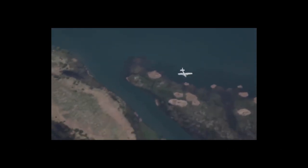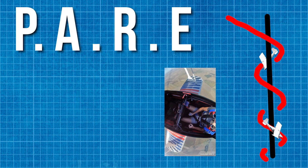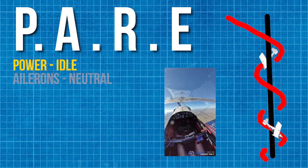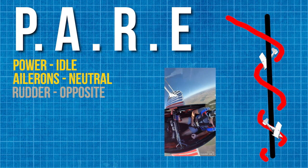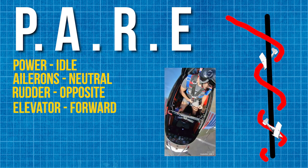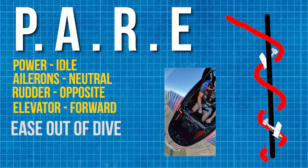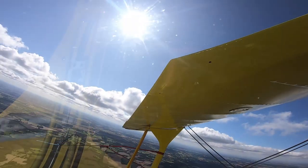You may enter a spin, and if you get yourself into a spin you will have to follow the PARE recovery: Power to idle, Ailerons to the neutral position, Rudder in the opposite direction to the spin, and Elevator forward. We will not be practicing a spin in this exercise as the aircraft we are flying are microlights.